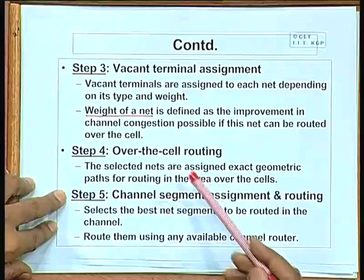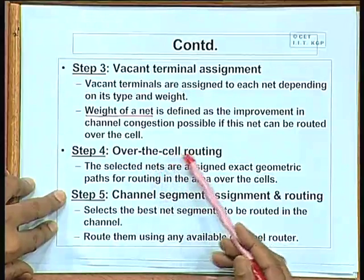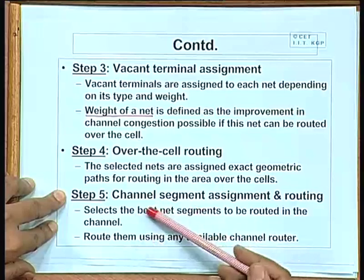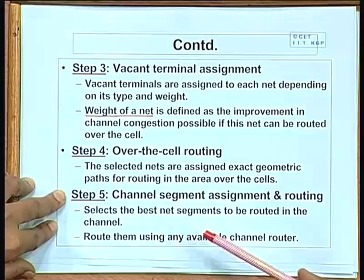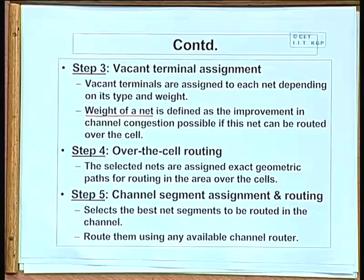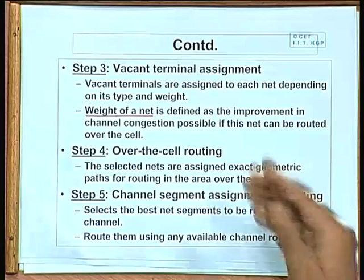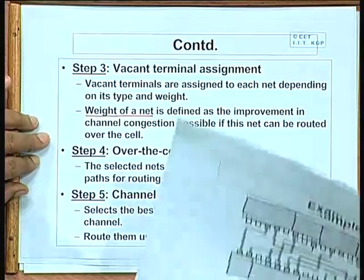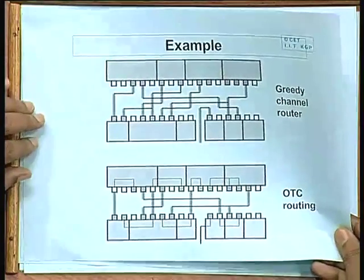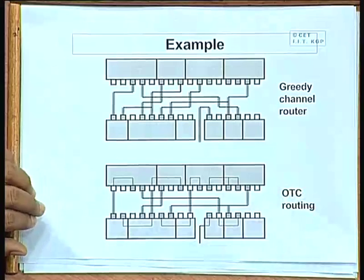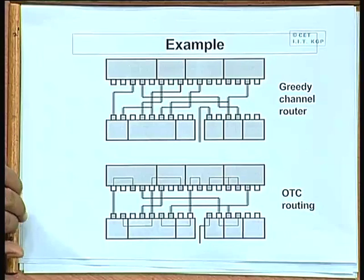Finally, after the over-the-cell routing is done, the remaining connections are completed using a conventional channel router. Let us look at an example — I have not gone through all the details of the algorithm, just the broad steps. Looking at this example will help understand what this means.